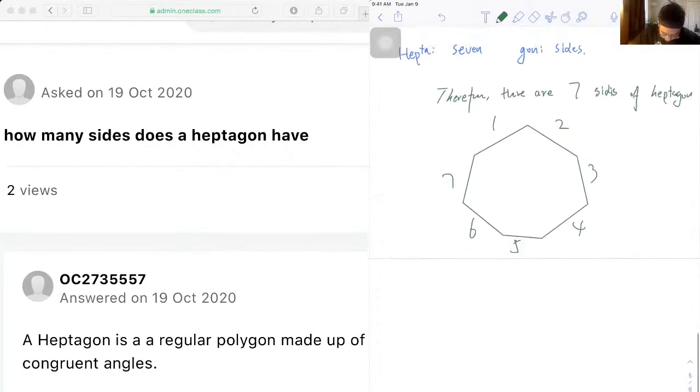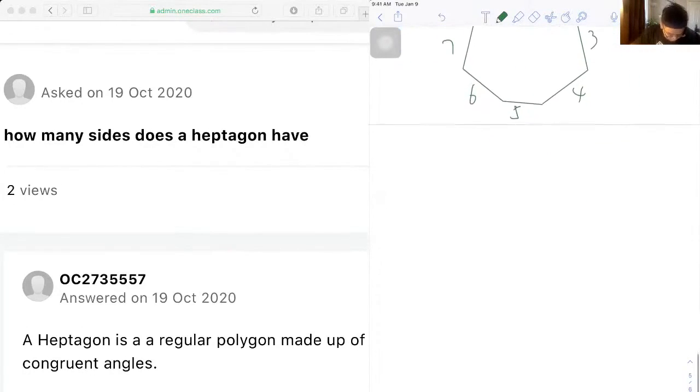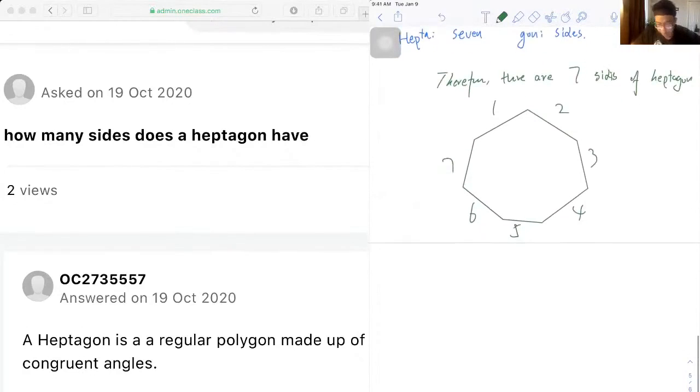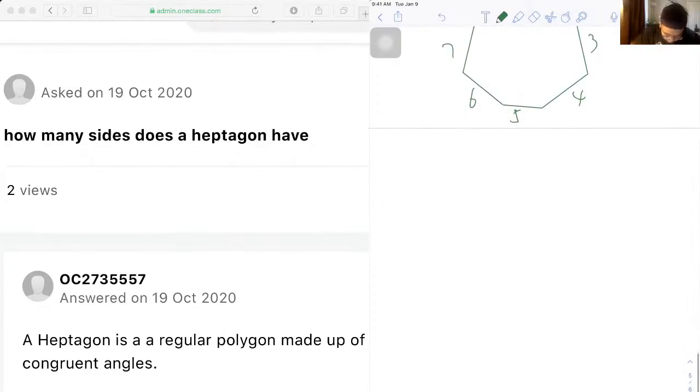I'll just do a little review about octagon, hexagon, and those commonly used polygons that we usually come across in our questions. So let's draw a pentagon. Pentagon has five sides.